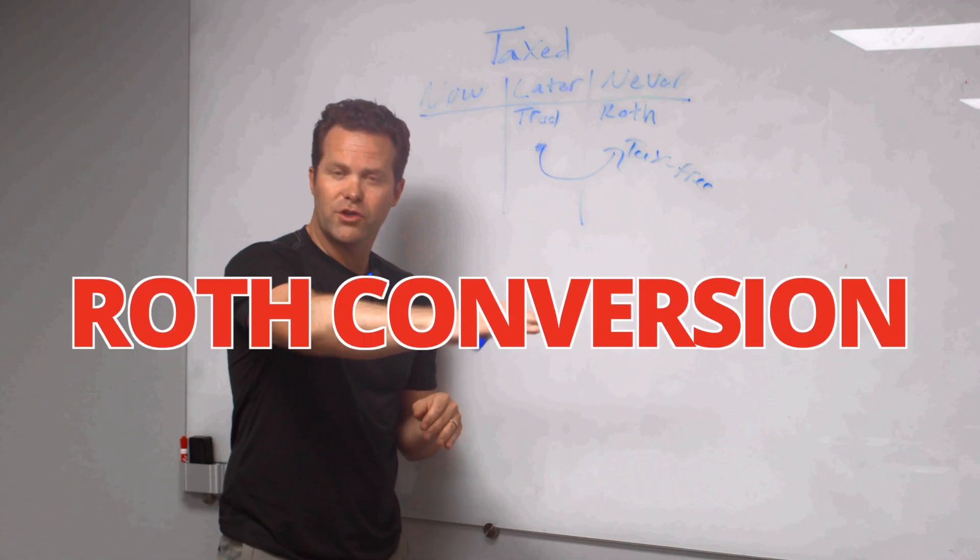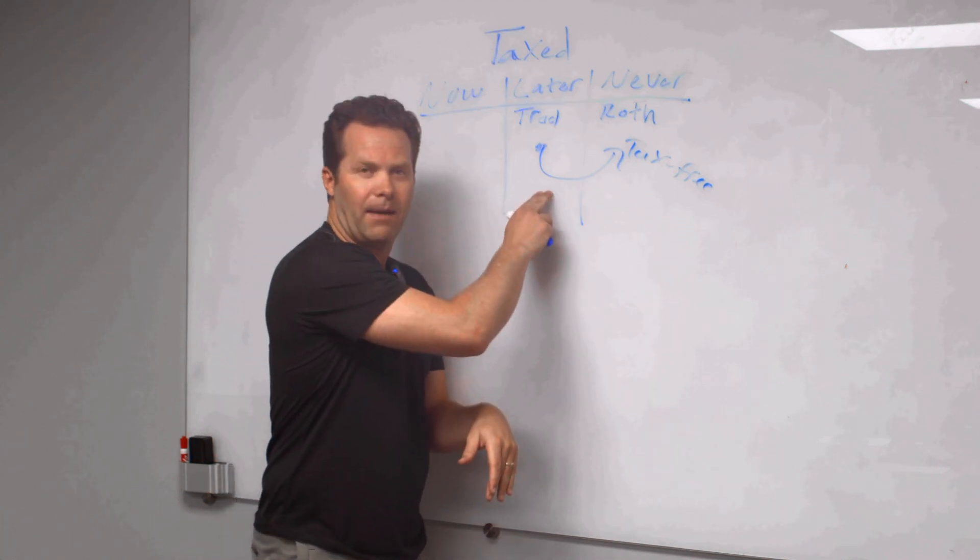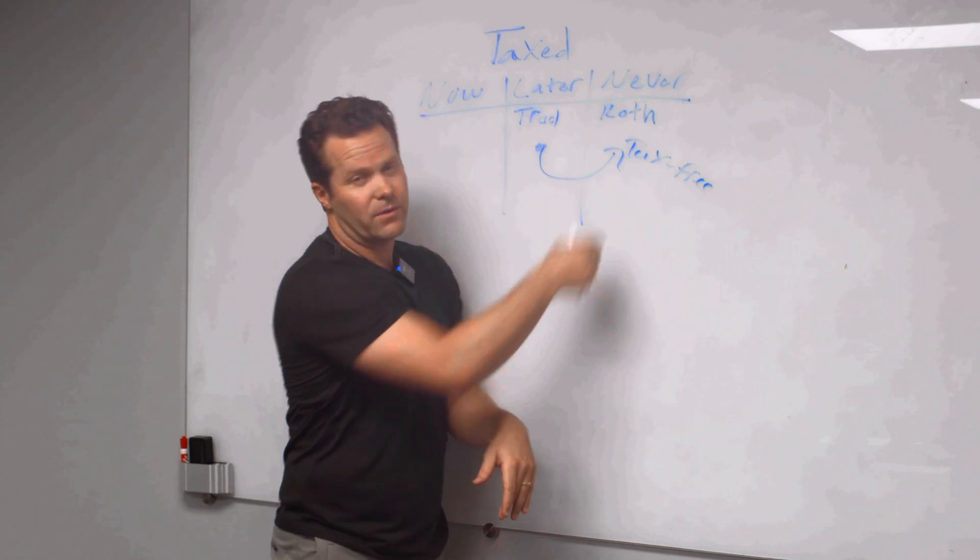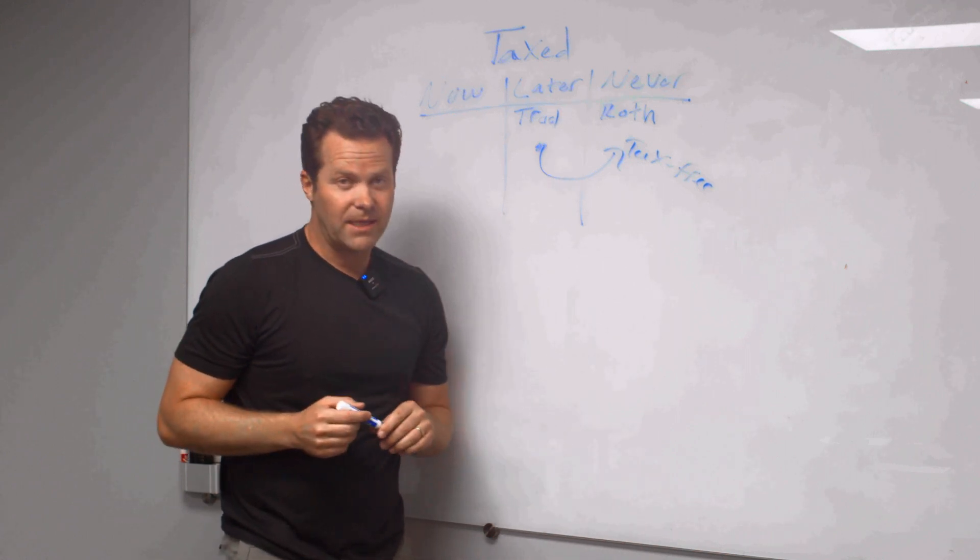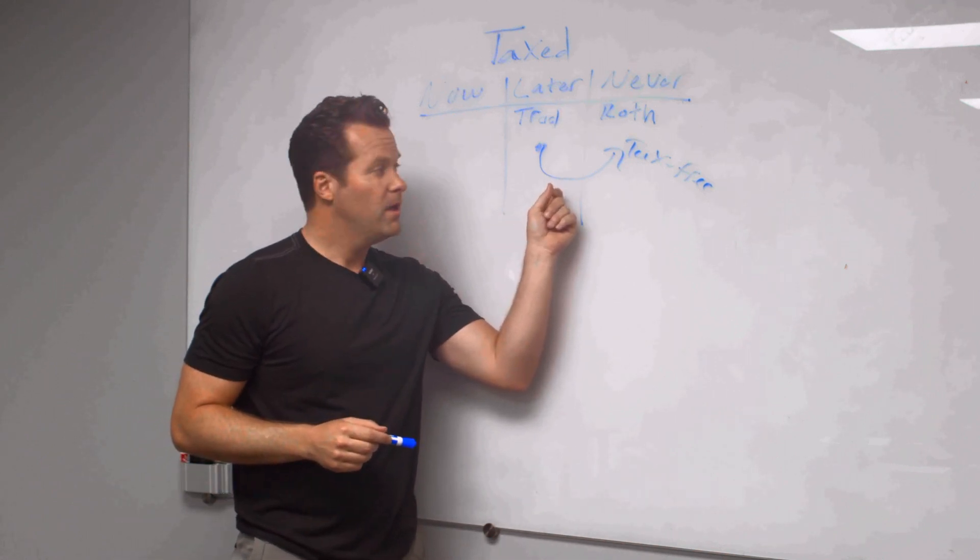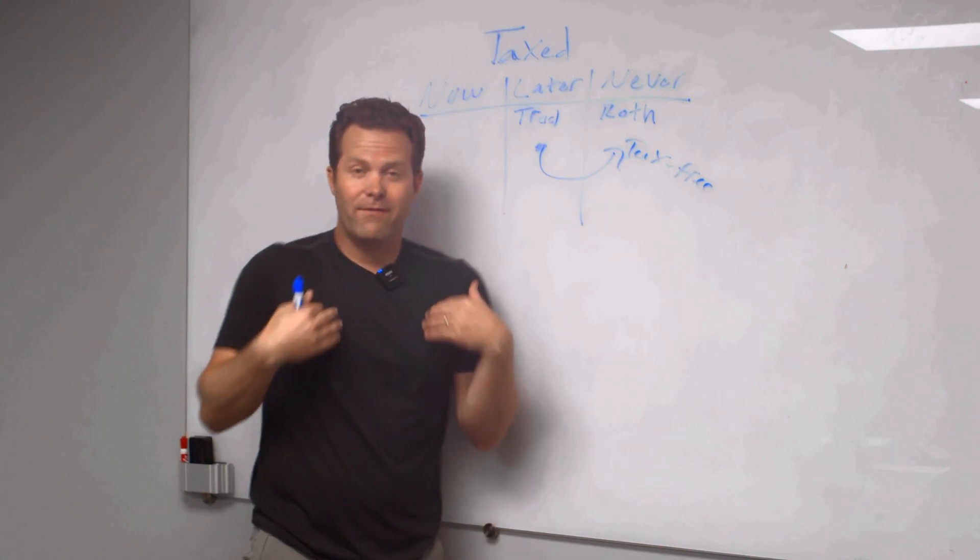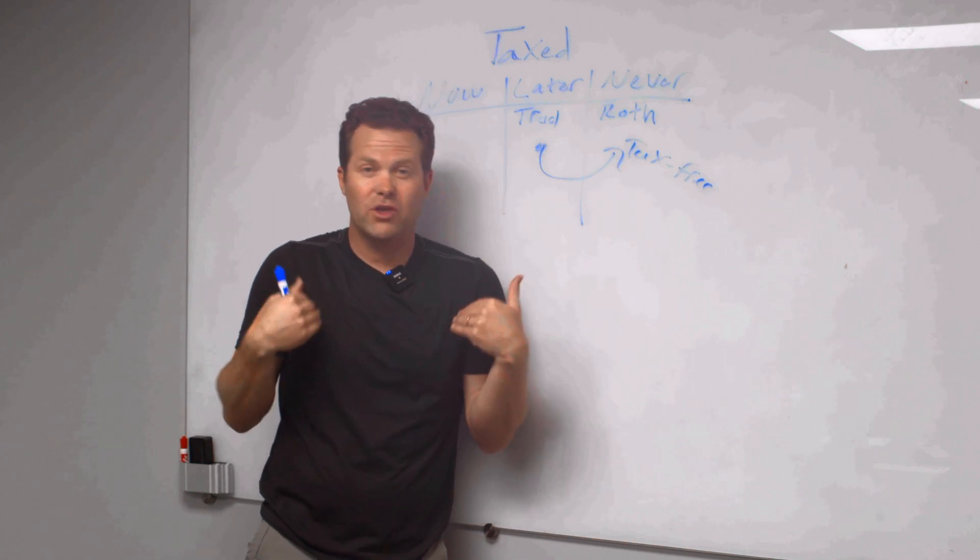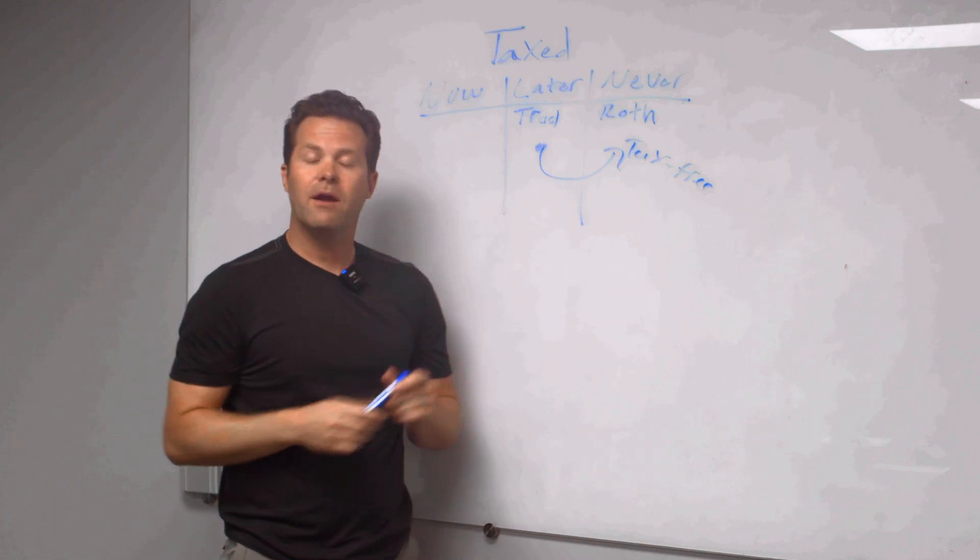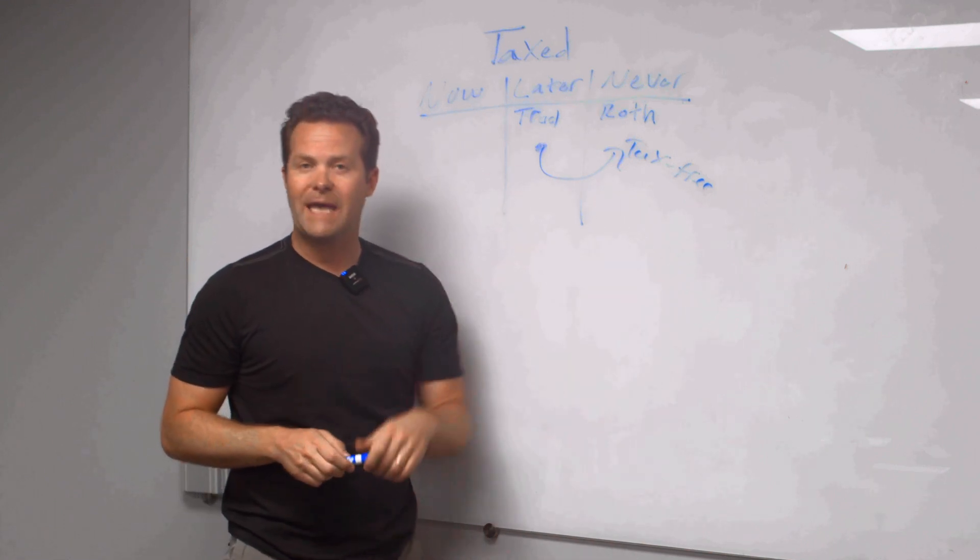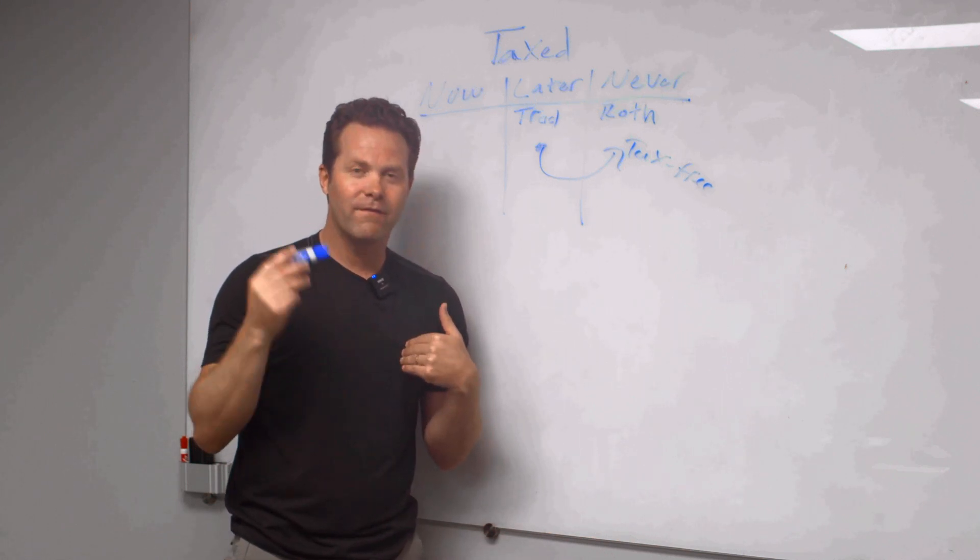Anyone can do a Roth conversion, regardless of income, prior rules income restricted it. Those have been removed. At any income, you can convert from traditional over to Roth. Now I said there's a price to pay. The ticket has a price. If you have a $200,000 traditional account, you want to be a $200,000 Roth account, you're going to get 1099. So like if you're with us at Directed IRA and you've got a traditional account and you say, Matt, convert that over to Roth. I can do it. I'm going to give you a Roth IRA account tomorrow.